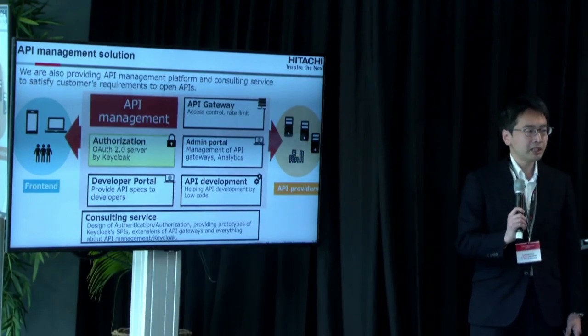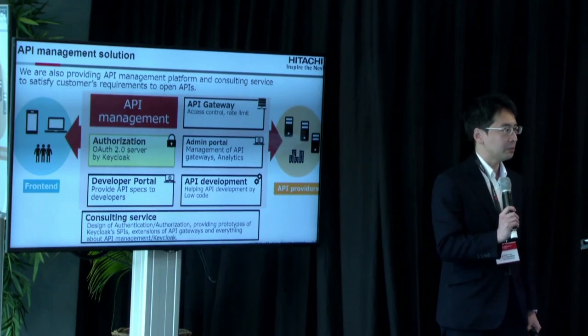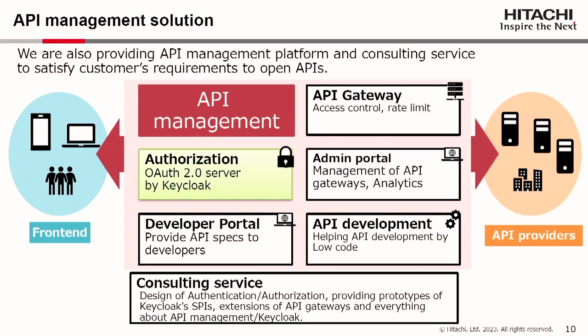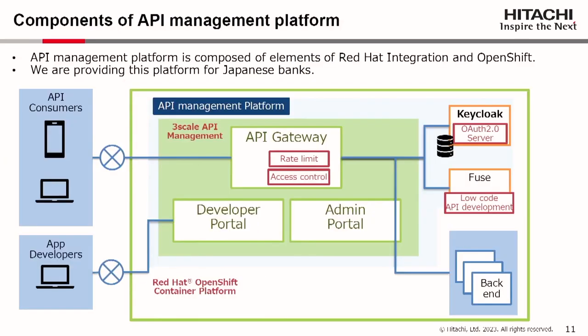We are also providing an API management platform and consulting service to satisfy customers' requirements to open APIs. There are a lot of requirements other than authorization, such as access control, rate limiting, and developer portal. This is a component of our API management platform, which is composed of elements of Red Hat Integration and OpenShift. On top of OpenShift, 3scale is deployed. 3scale provides the API gateway and developer and admin portal.